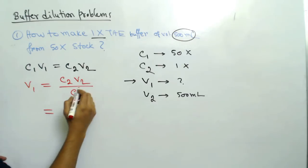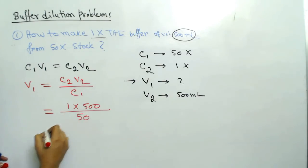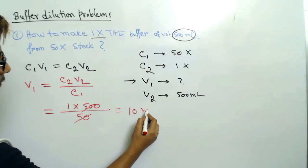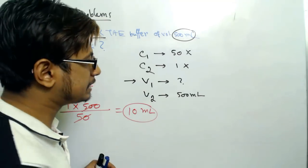C2 means 1, V2 is 500 milliliters, divided by C1 which is 50. So what we can say: 10 milliliters. The V1 will be 10 milliliters. What does that mean? That means let's take this is...